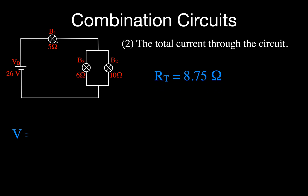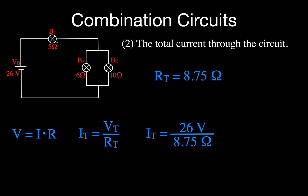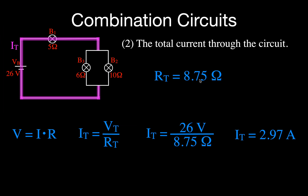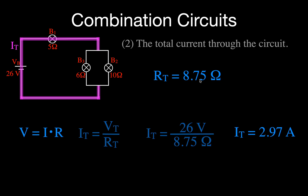Now we want to know the current. Using Ohm's Law, total current equals total voltage divided by total resistance. The total voltage is 26 volts, and we calculated the total resistance as 8.75 ohms, so the total current is 2.97 amps. That means anywhere along that main path — the purple path — the current is 2.97 amperes.